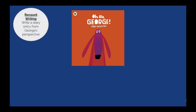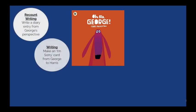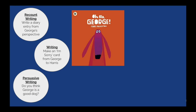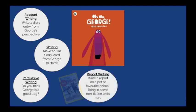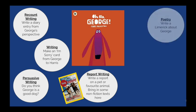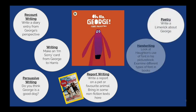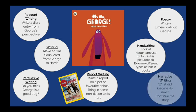It doesn't have to stop there — bring in some more writing genres: recounts, creative writing, persuasive writing, report writing. A great opportunity to bring in that informational text. A text like Oh No George brings plenty of opportunities for poetry writing, even exploring the handwriting with the type of font the author has used, and of course narrative writing.